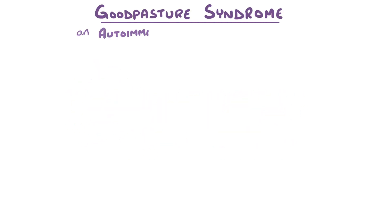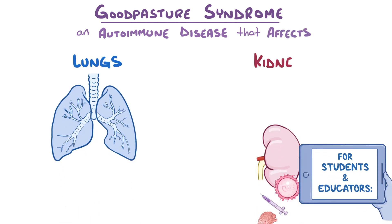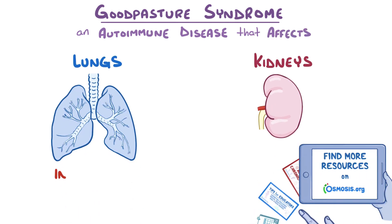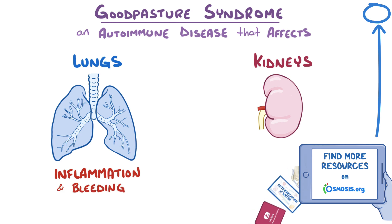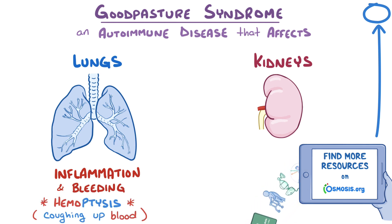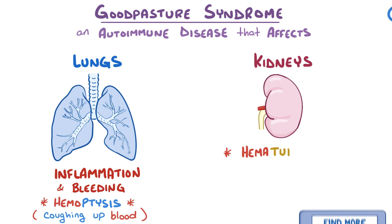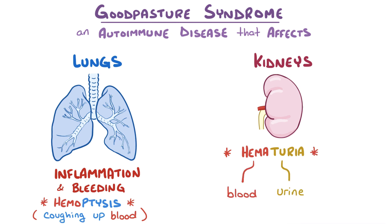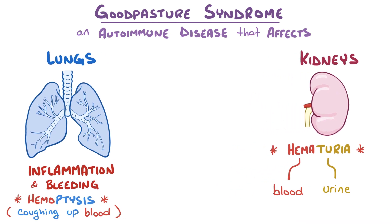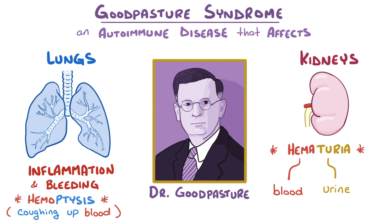Goodpasture syndrome is an autoimmune disease that primarily affects two organs: the lungs and the kidneys. It causes inflammation and eventually bleeding in the lungs, which leads to hemoptysis or coughing up of blood, and hematuria or blood in the urine — a pattern first recognized by the pathologist Dr. Ernest Goodpasture.